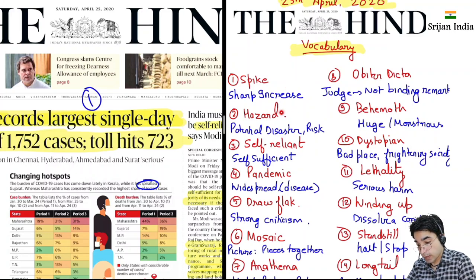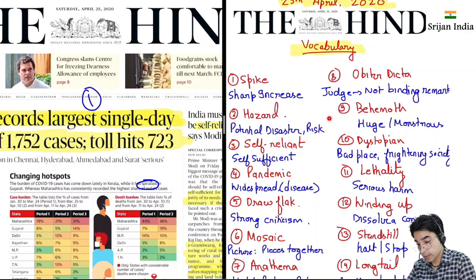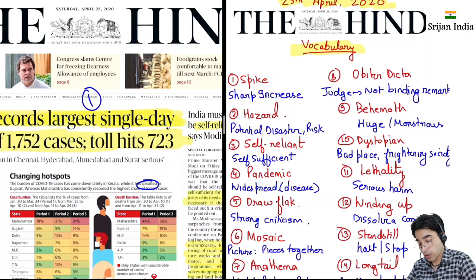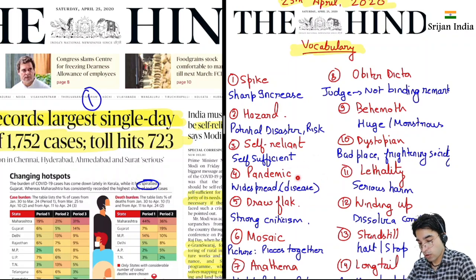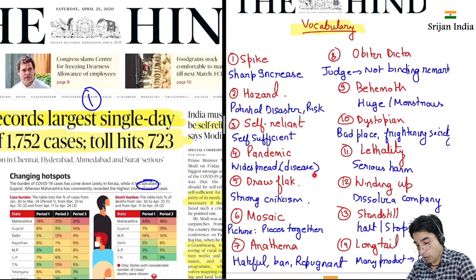Hazard ka matlab hota hai potential disaster, matlab potential hai disaster kerne ka — that is called hazard. Risk ko hazard bolta hai. Self-reliant ka matlab hota hai self-sufficient hona. Pandemic ka mean hota hai widespread hona, disease ke context mein use kerta hai. Draw flak matlab strong criticism aap receive kar raho — that is draw flak.